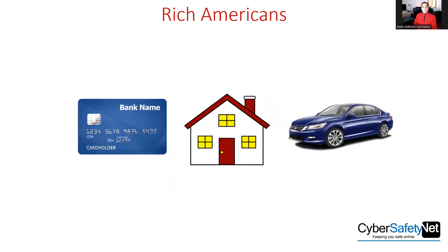When I talk about ransomware and the CIA triad on stage, I talk about us being rich Americans. Rich Americans are popular targets. There's always somebody in the front row who says, 'Rich Americans — he's never seen the bills I pay each month.' They think I can't hear them, but I do. In order to be a rich American, you need one of three criteria: a credit card, a home that is 800 square feet or larger, and a car that starts on the first try. I'm not setting the bar that high, now am I.